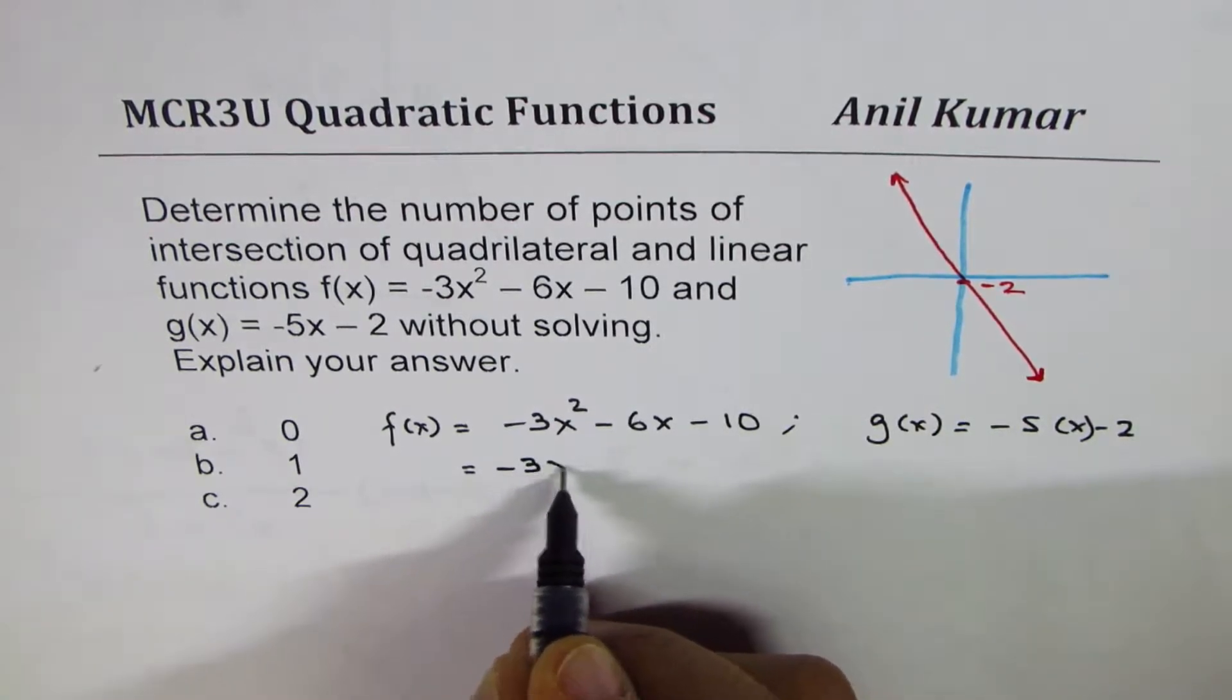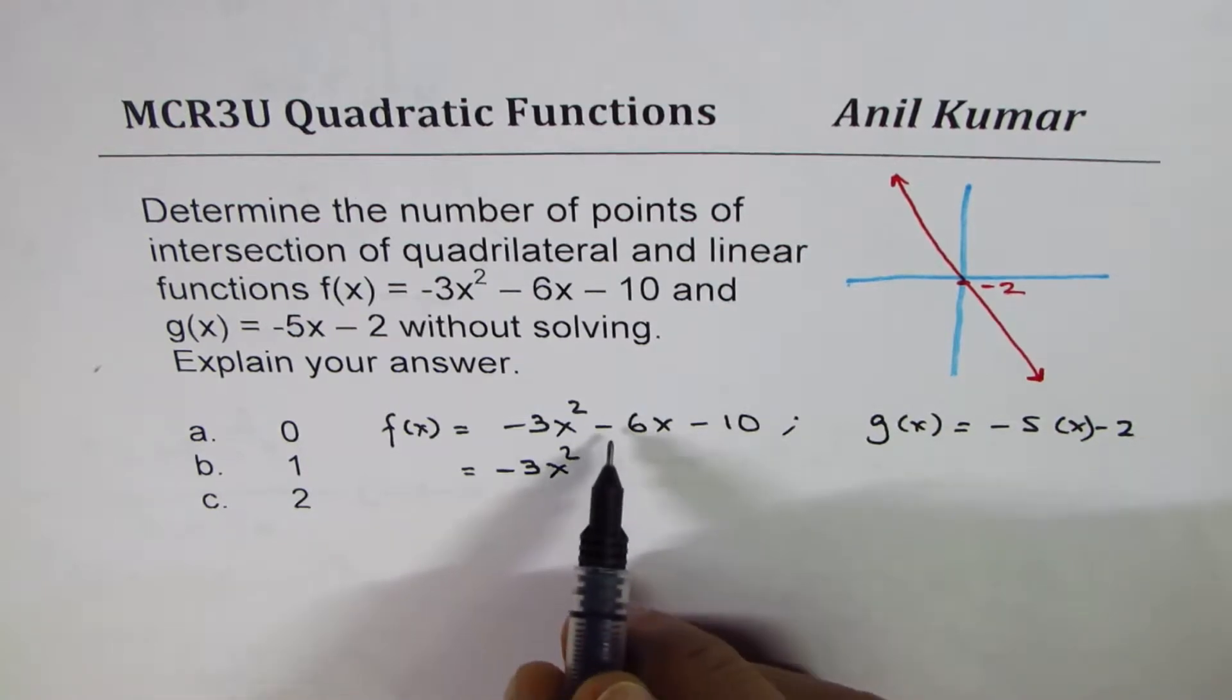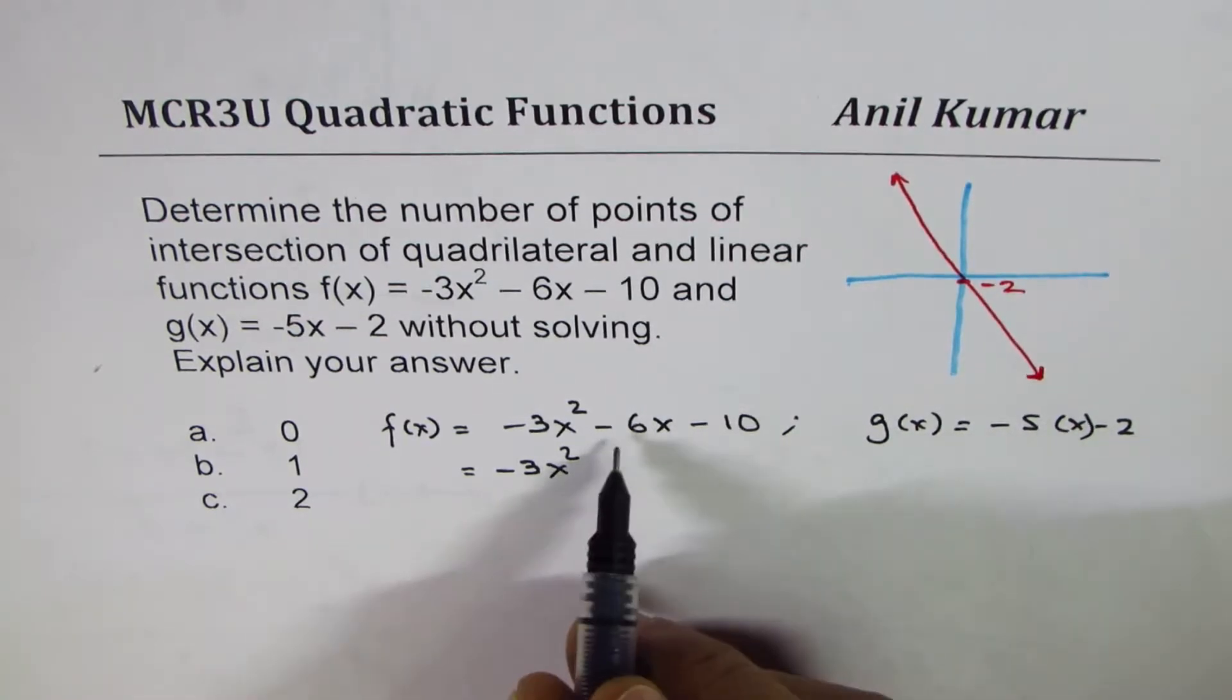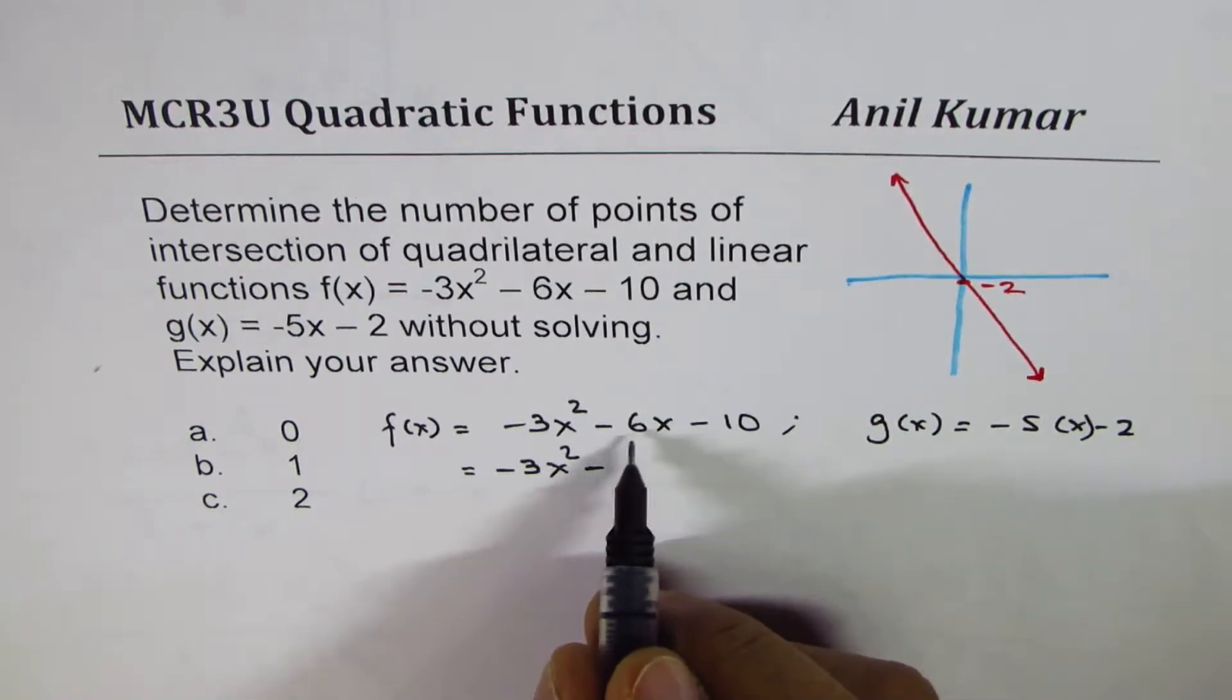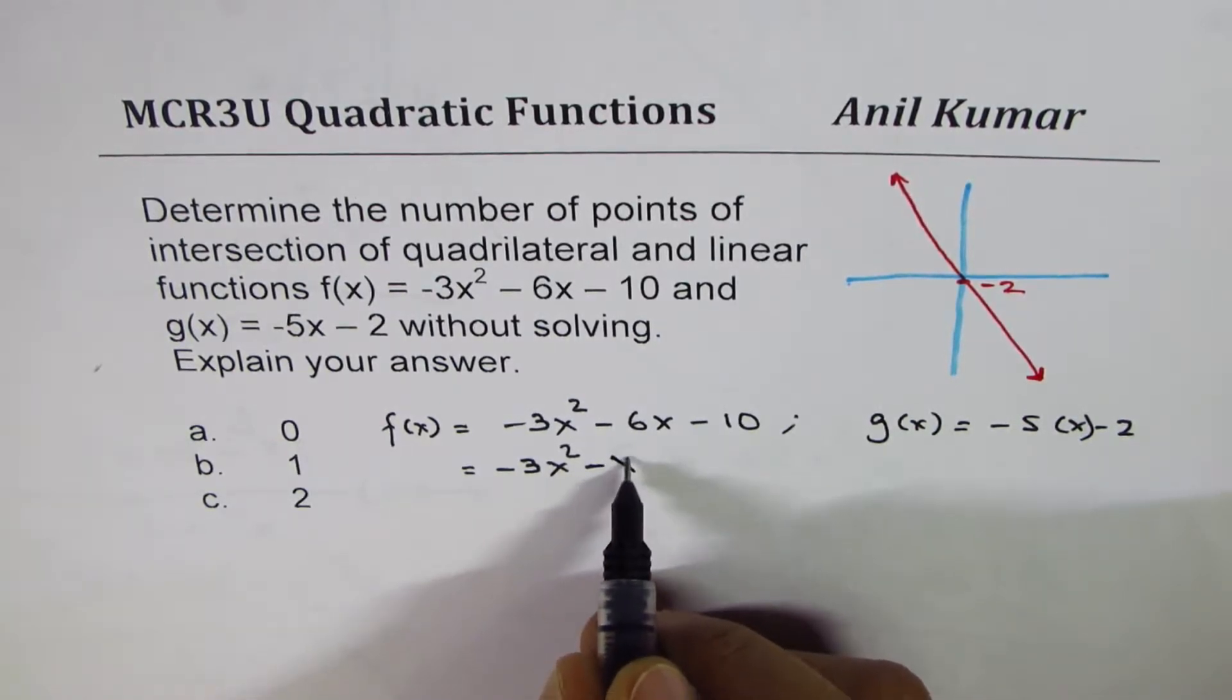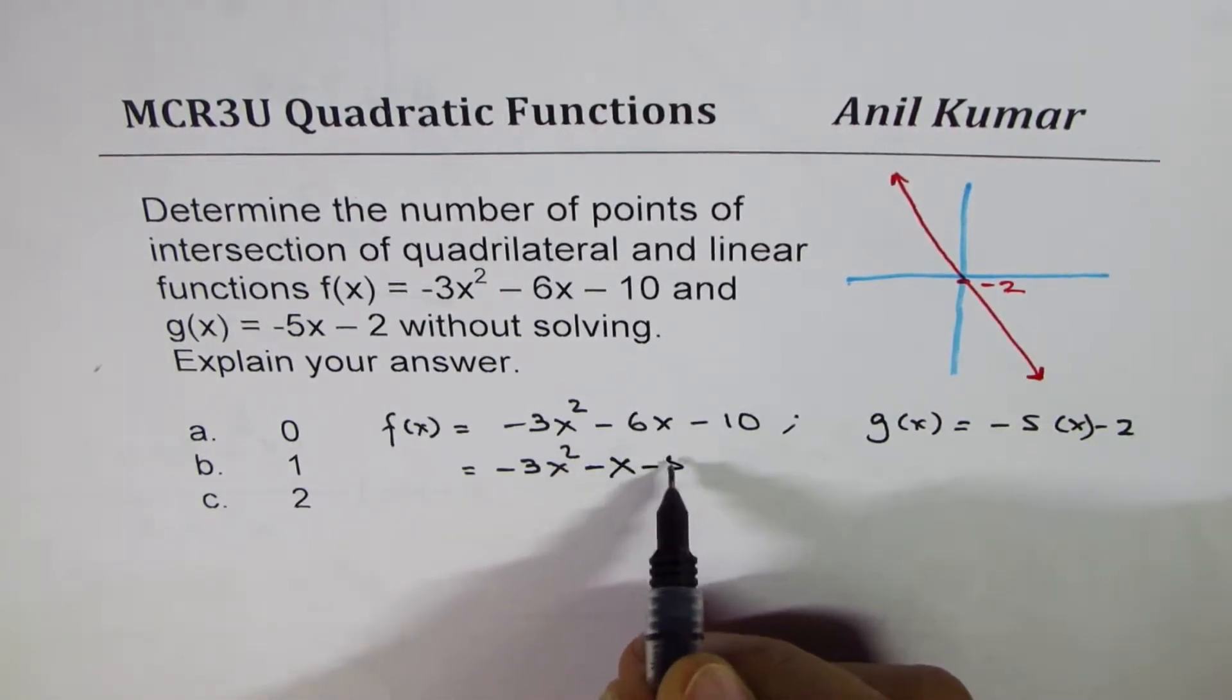So -6x could be written as -x, and I'm writing -10... Let me write this as -6x = -x - 5x, and I'll write -10 as -8 - 2.